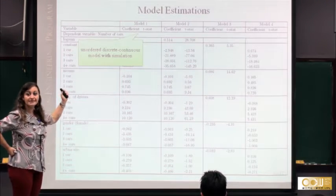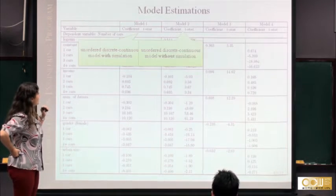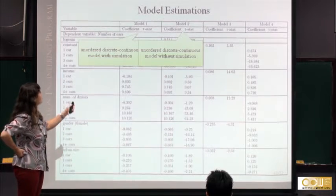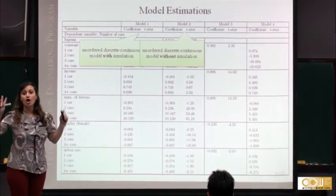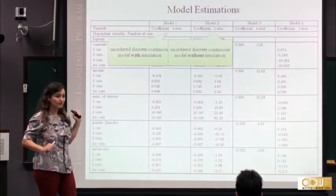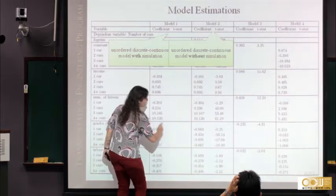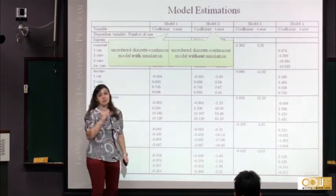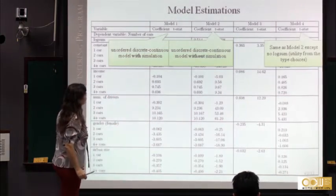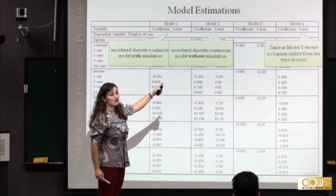We are comparing four models. The first is an ordered discrete-continuous model with simulation: multinomial probit plus regression solved with simulation. The four model comparison allows us to assess whether the ordered or unordered mechanism performs better for vehicle ownership, and whether incorporating the continuous mileage decision improves model fit.